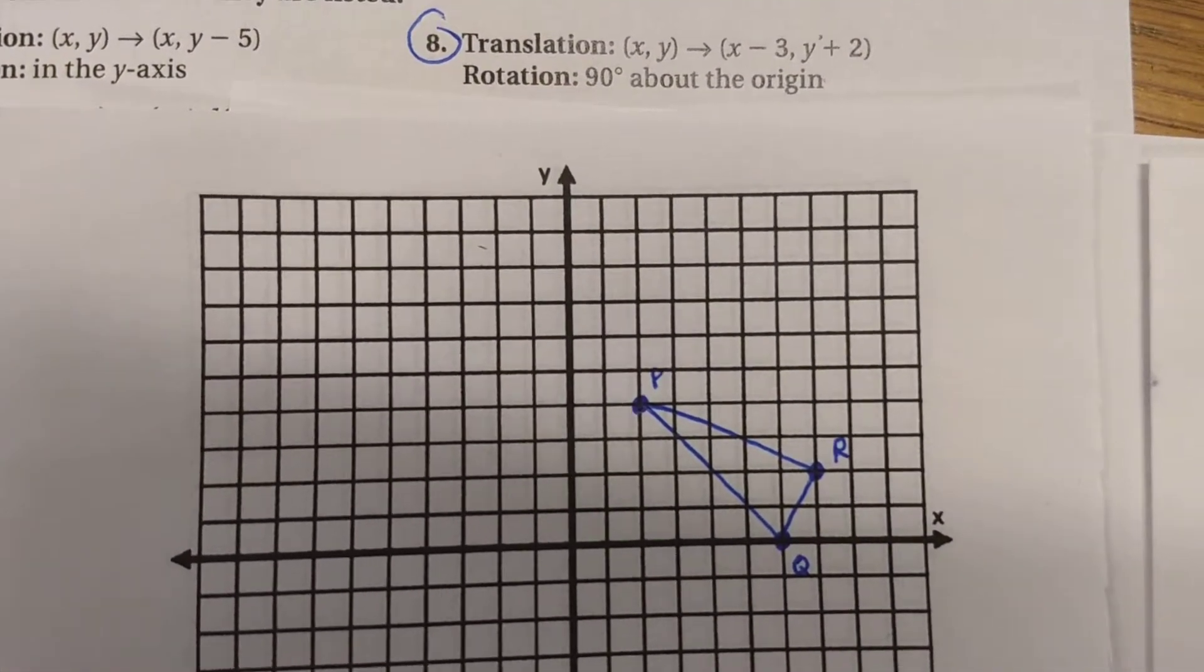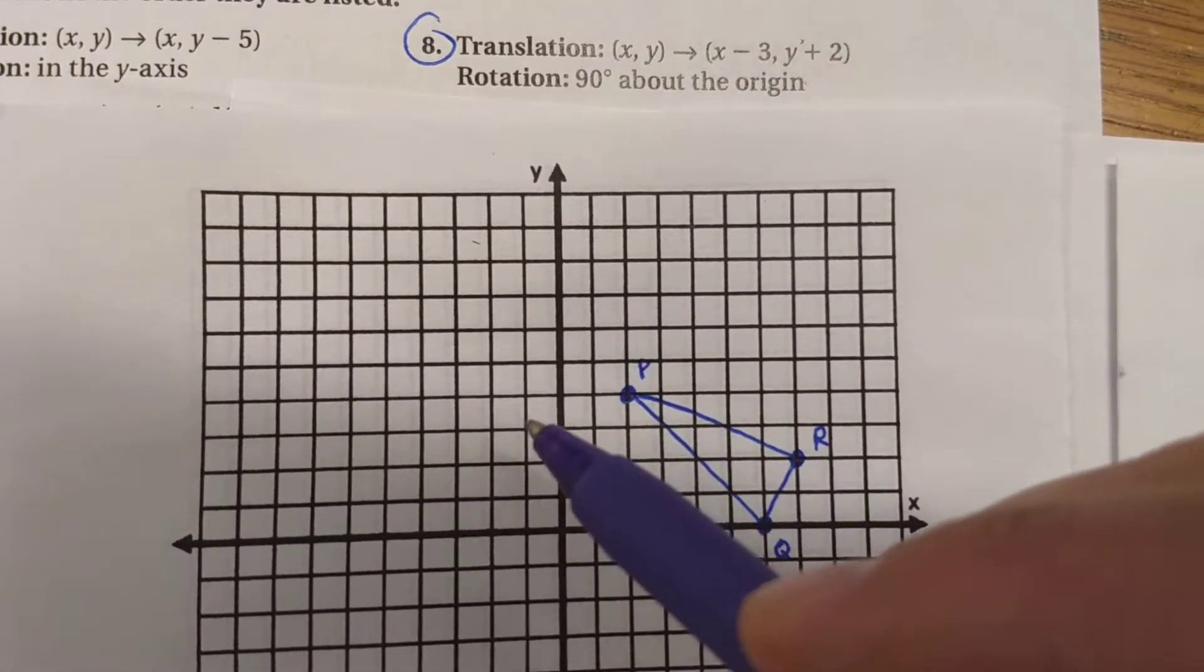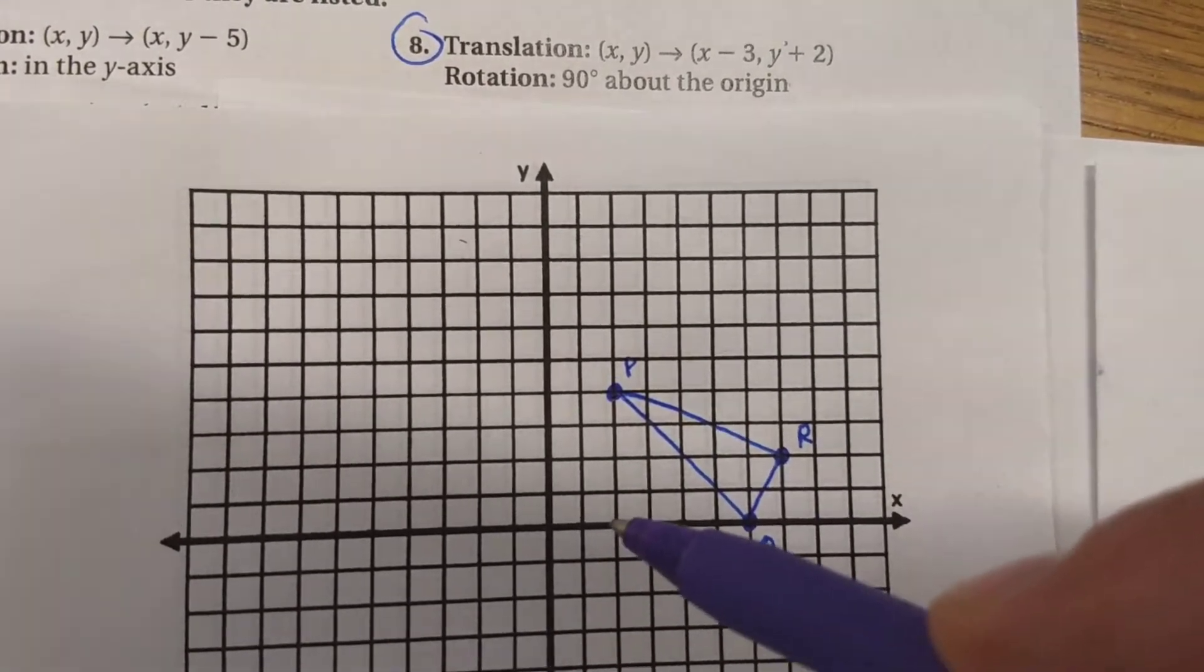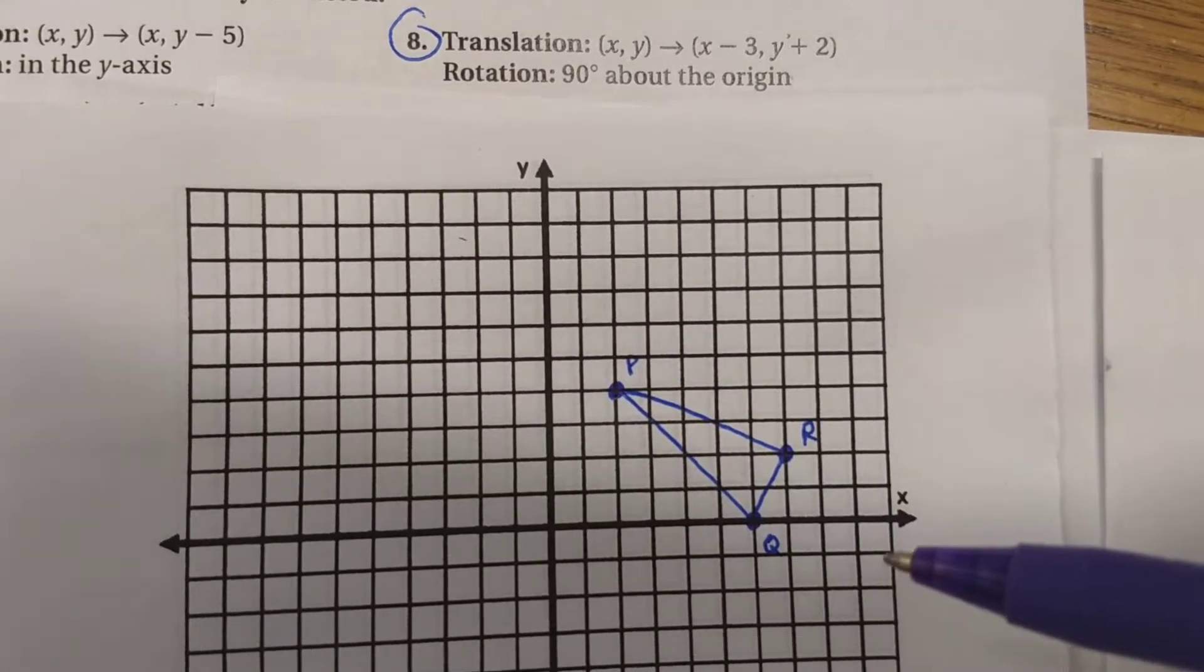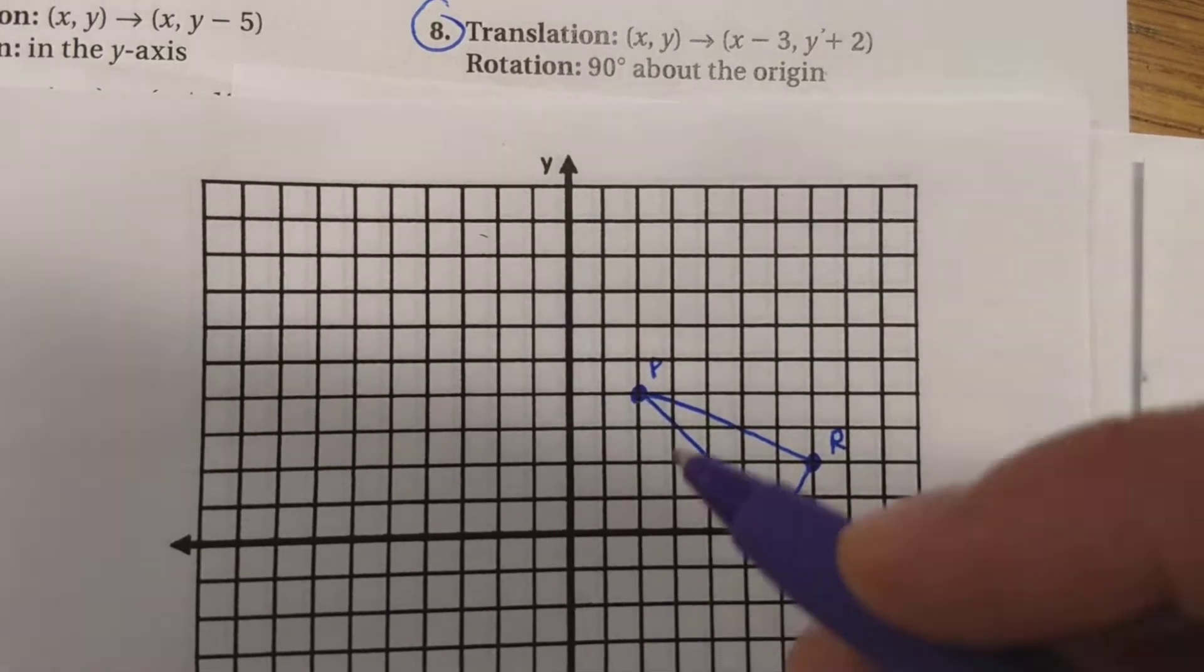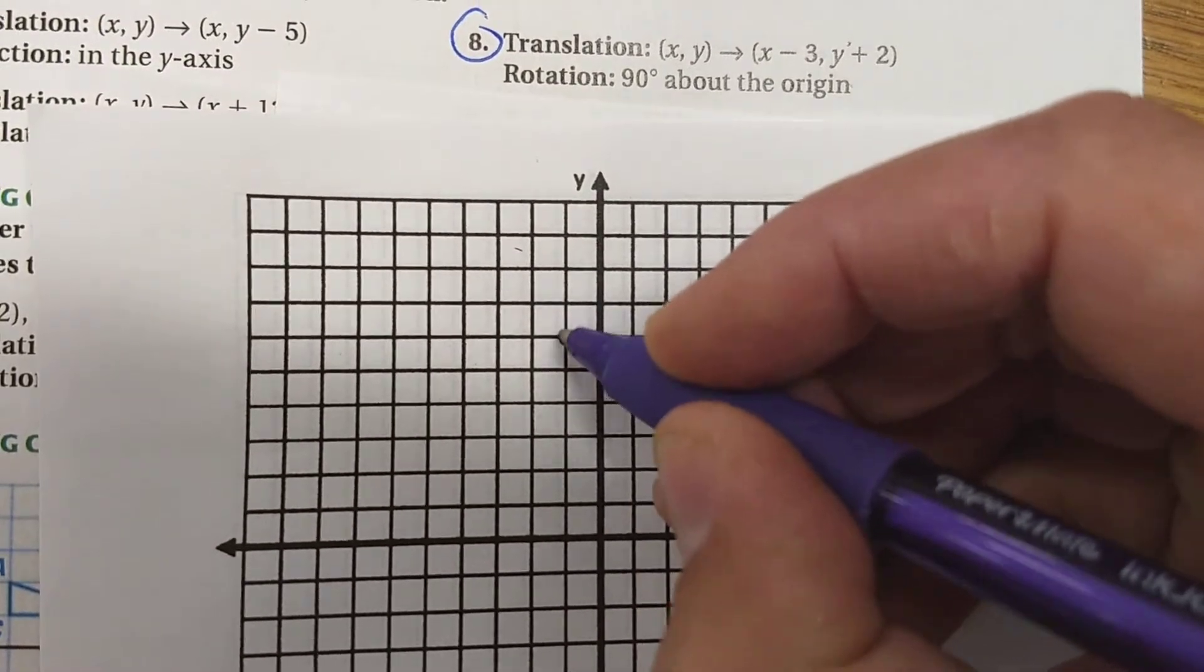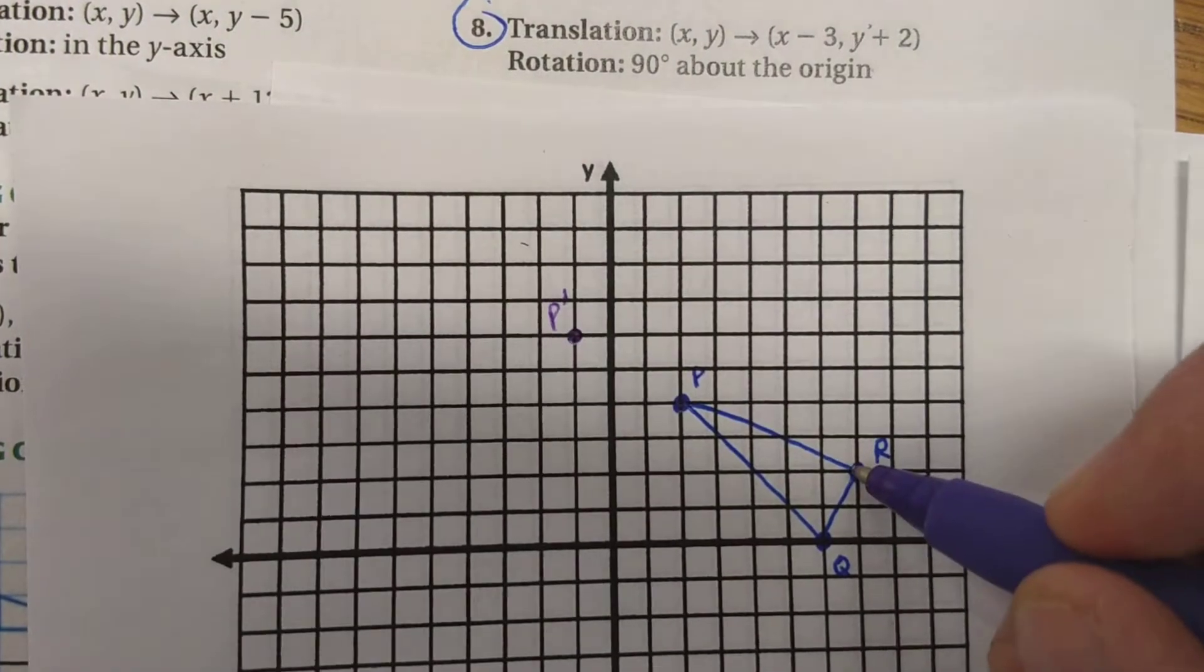But first, let's translate it. If I'm going to move every x value 3 over and then every y unit 2 up, I could list out these coordinates and subtract 3 from the x and add 2 to the y, and I'd have three new coordinates that I could graph. I think in this case, if I'm drawing it out, it's probably easier for me to just move from that point 3 over and 2 up. And that would be my new p prime value. And do the same thing with r and q.